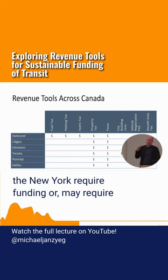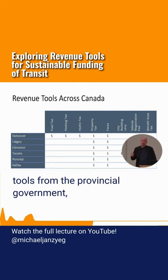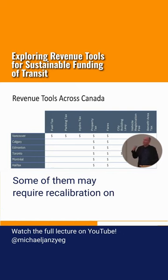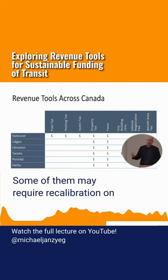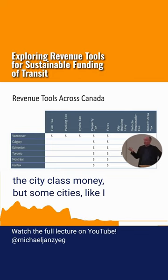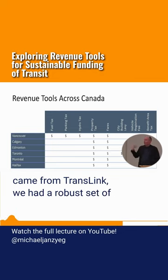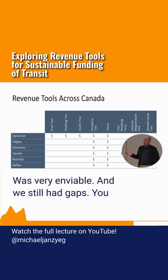Now, some of those tools may require funding or may require tools from the government. Some of them may require recalibration and some of that's money. But some cities, like Ike and Transit, had robust revenue tools that were very equitable, and we still had gaps.